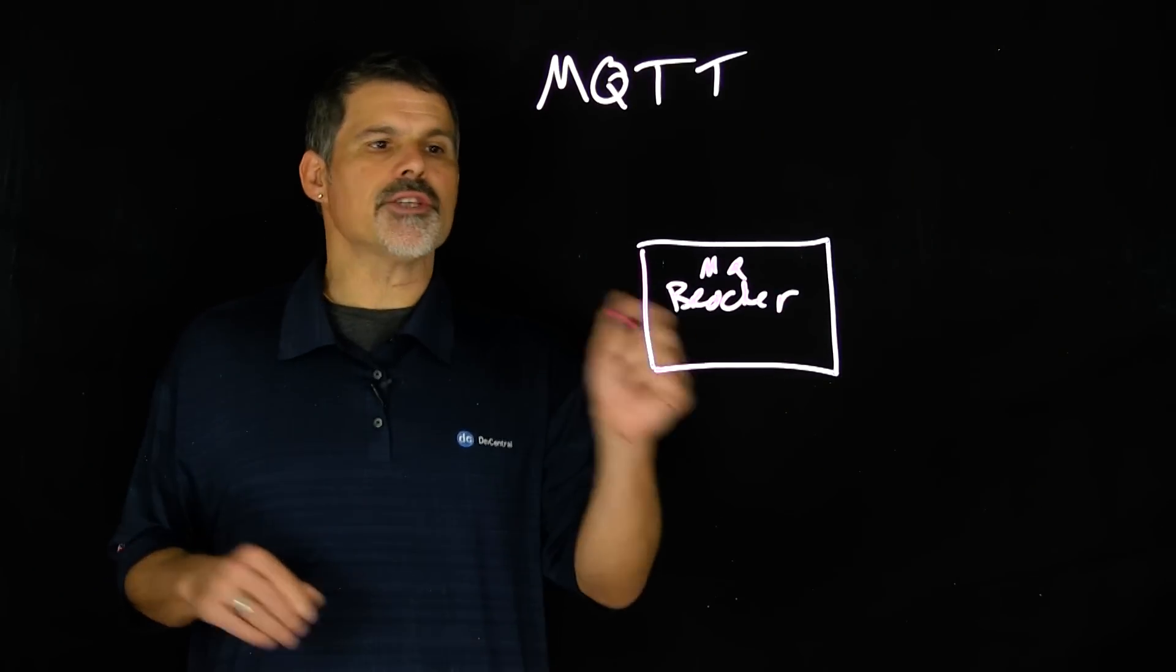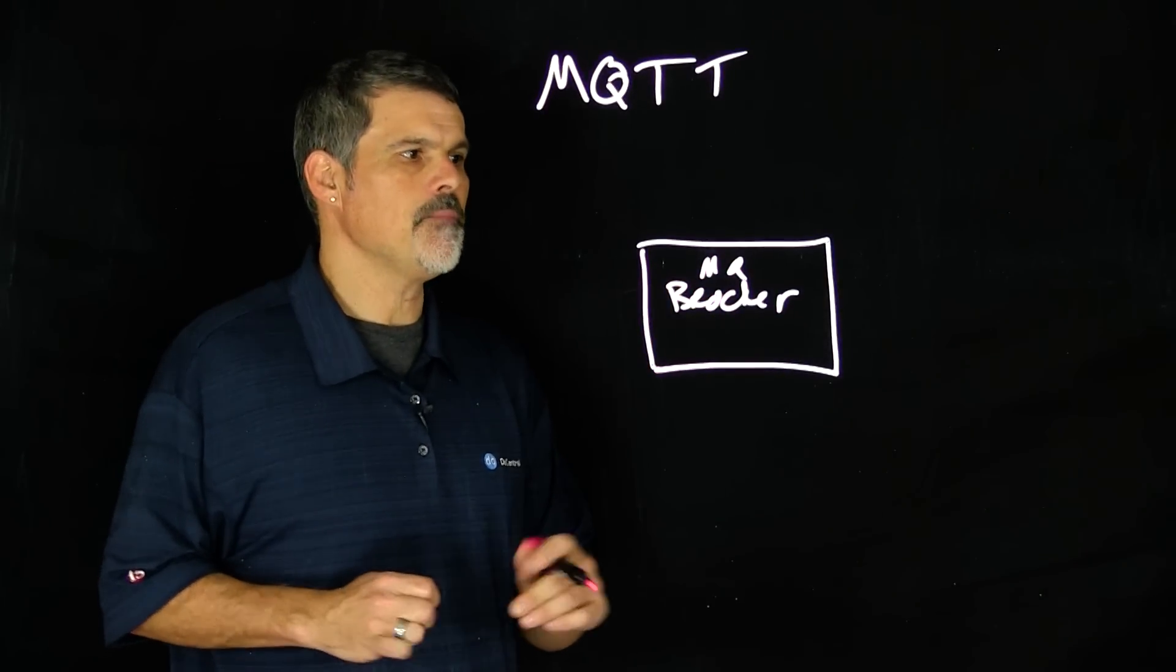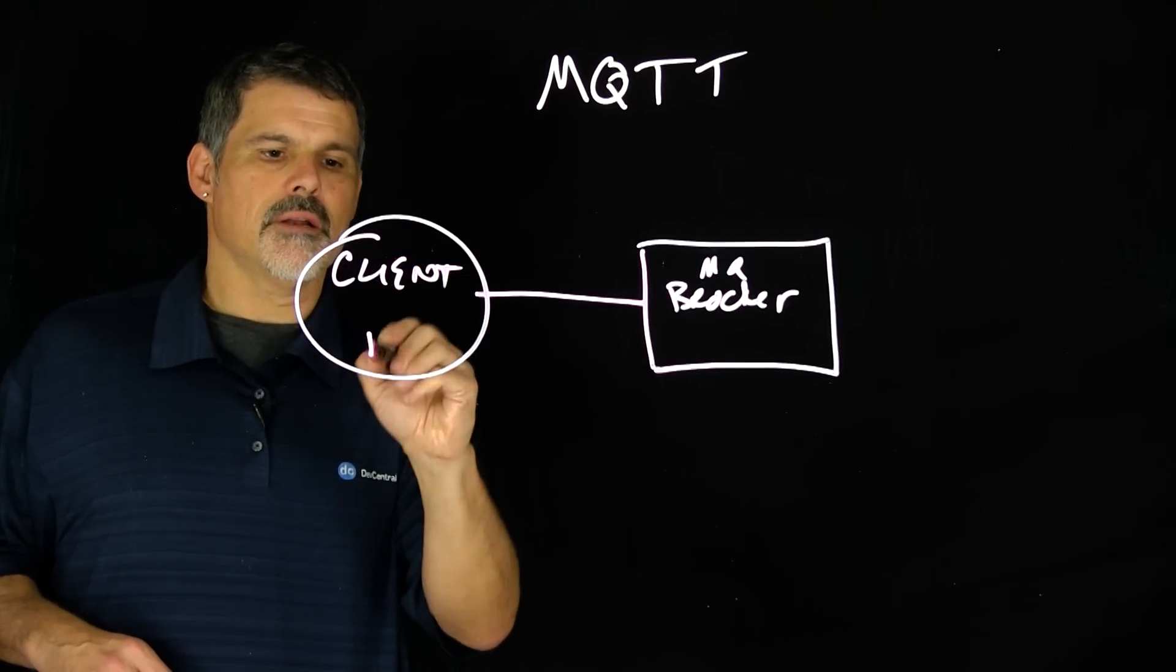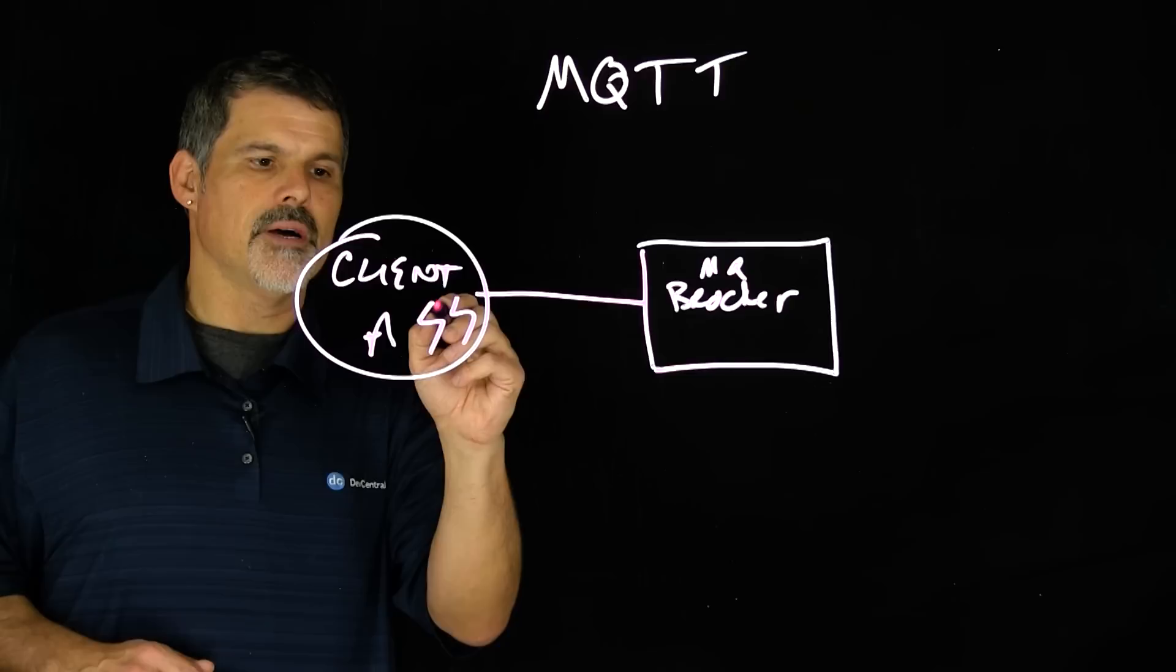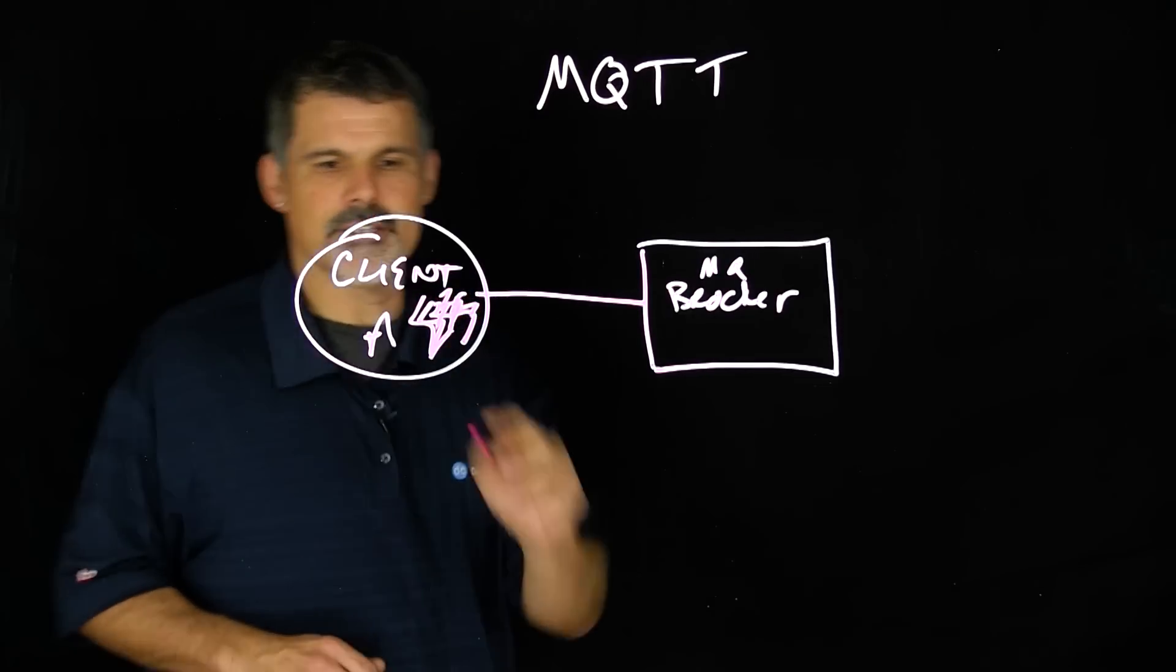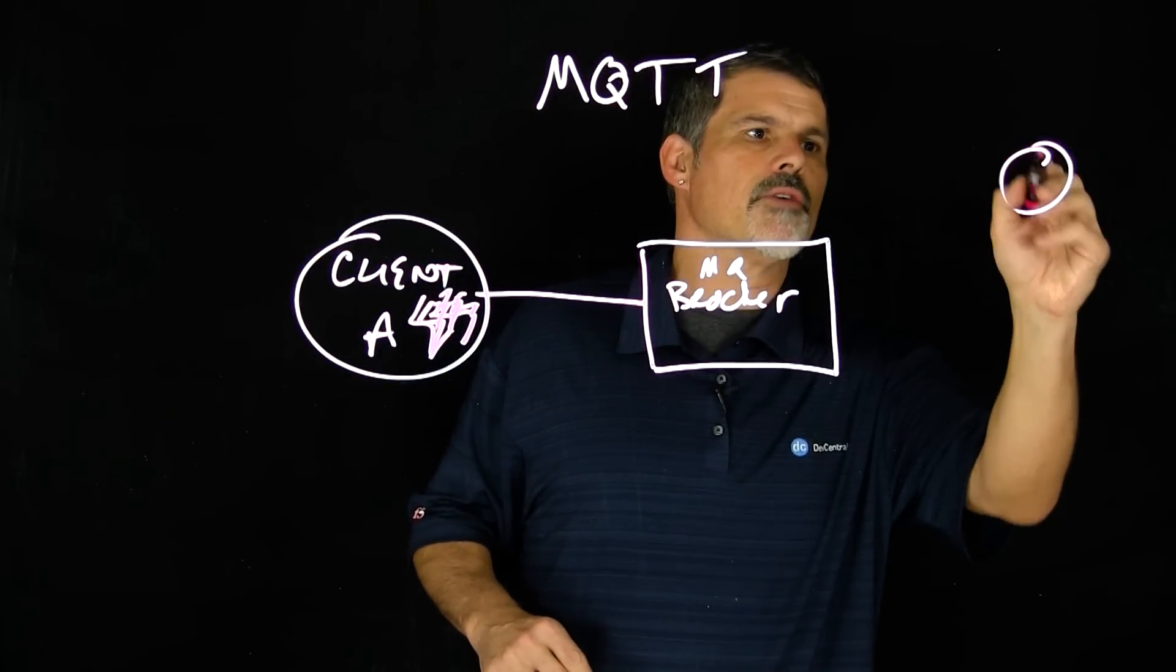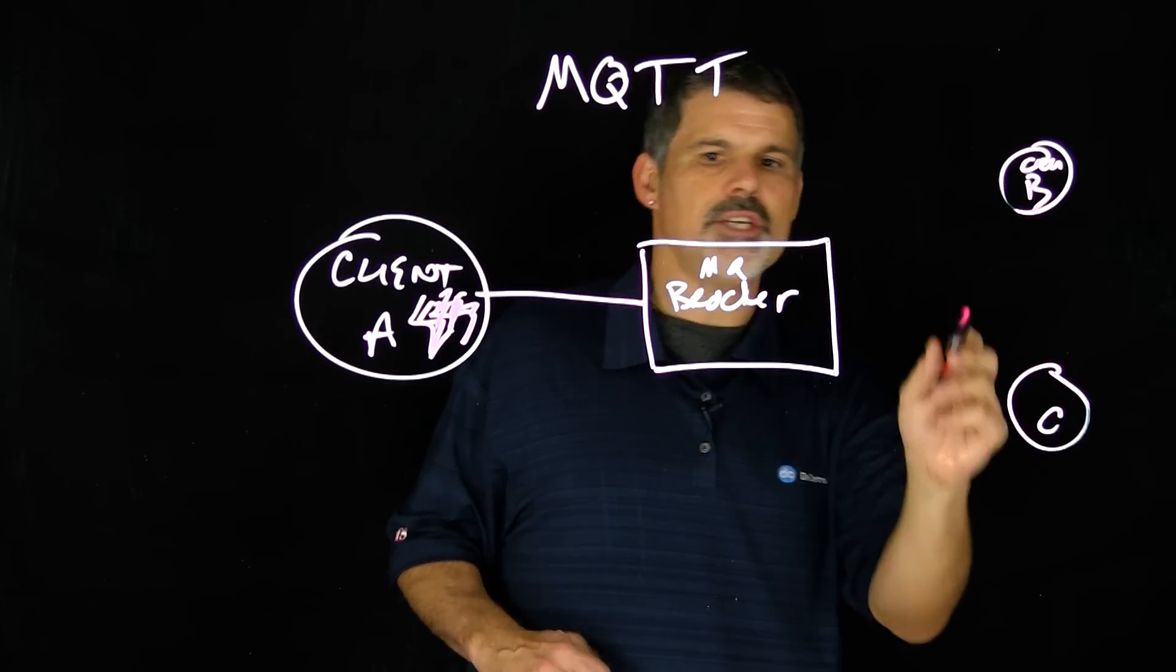And how that works is, so now we have our MQ broker sitting there in the middle and then let's just make client A out here and this might be your sensors, your collectors. And then over here, let's do client B and client C.